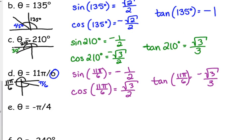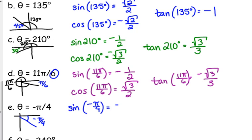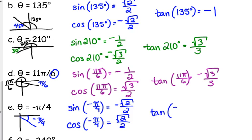Let's do negative pi over 4. Negative angles are a reality. Negative pi over 4 is in the fourth quadrant, right here. Its reference angle is positive pi over 4. So the sine of negative pi over 4 is negative square root of 2 over 2. Cosine of negative pi over 4 is positive square root of 2 over 2. And tangent of negative pi over 4 is negative 1.